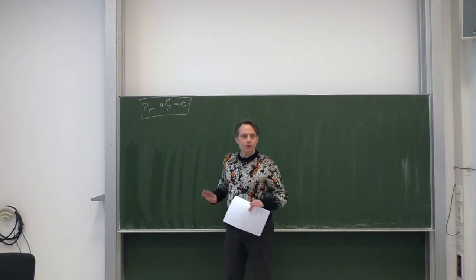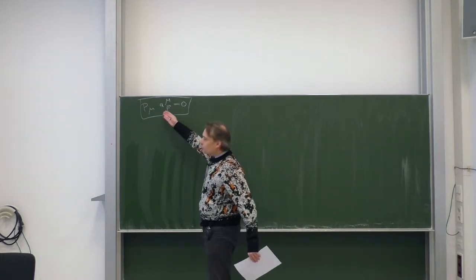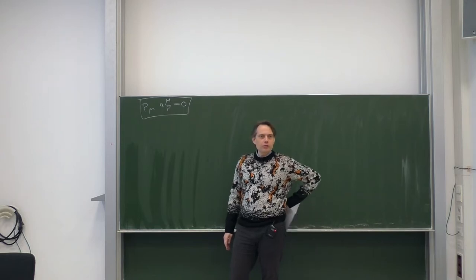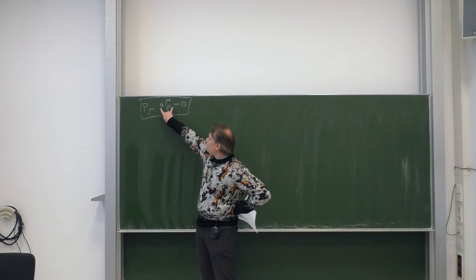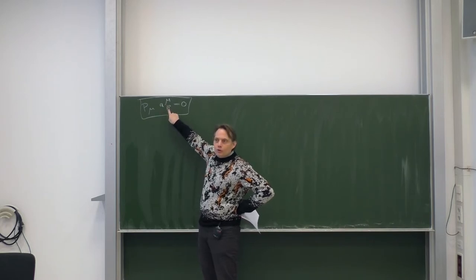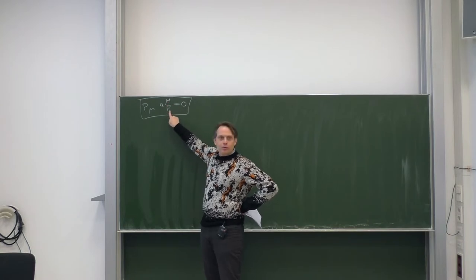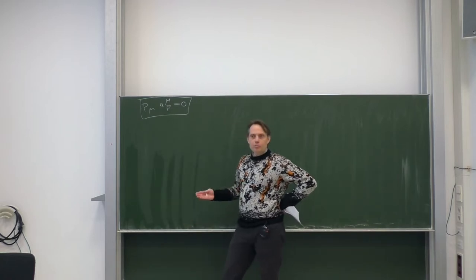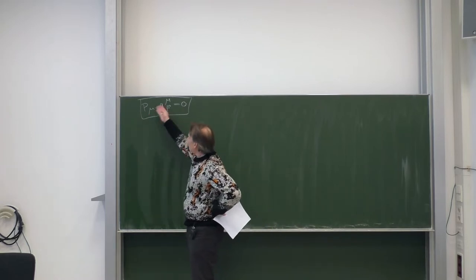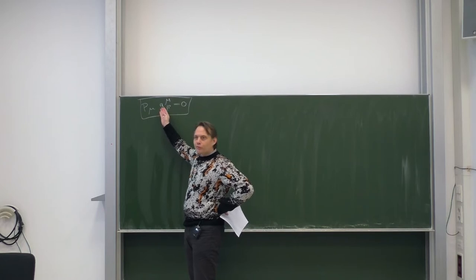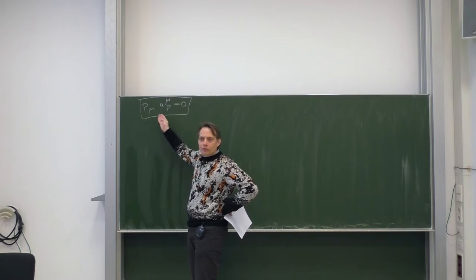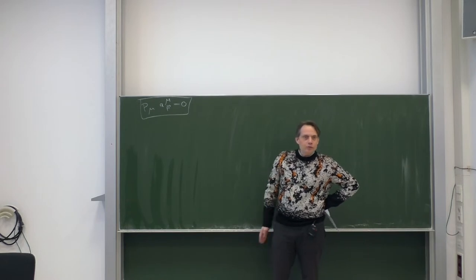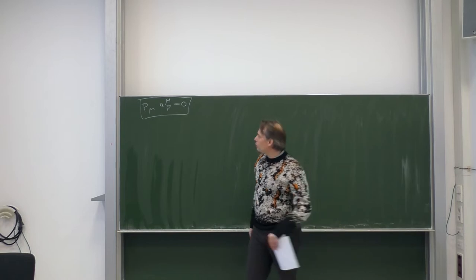Let's continue with our lecture from two days ago. The last item was the Fourier decomposition of the vector field for a massive spin-1 particle, containing as Fourier coefficients operators a-mu of p. These are four operators for each value of the momentum p, and this equation needs to be satisfied as a consequence of the proper equation of motion. It is a linear equation between those four operators, so you can eliminate one of the four in favor of the other three. The solution of this equation is what I want to discuss now, and it is also an important part of the next exercise sheet.